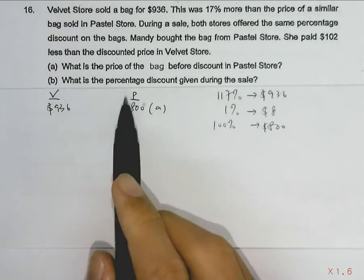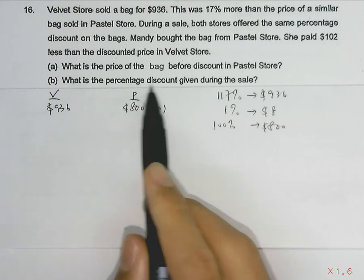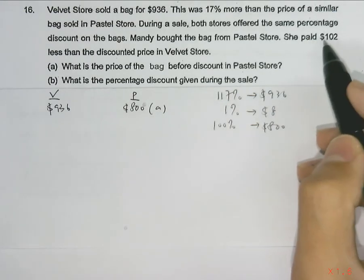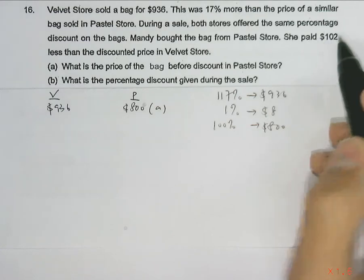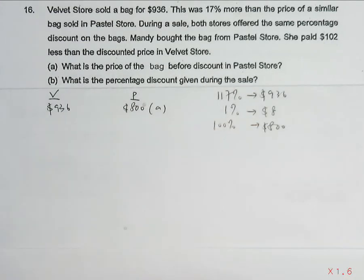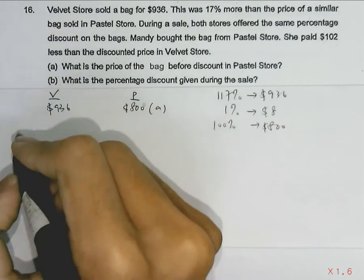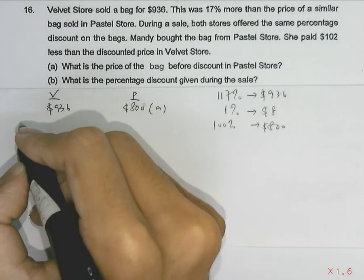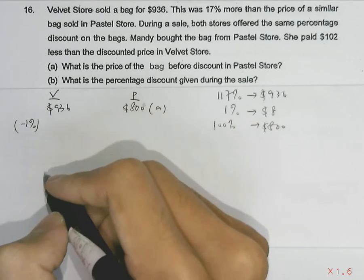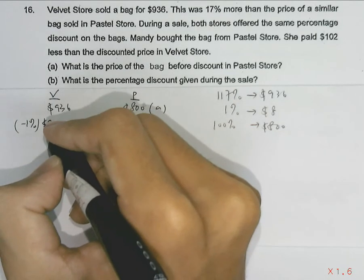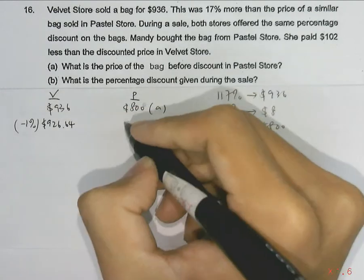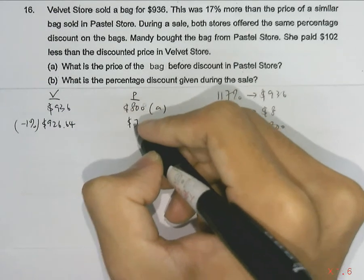Moving on to part B, they asked what is the percentage discount given during the sale, knowing that she paid $102 less than the discounted price in the velvet store. If both stores have a 1% discount, the velvet store will be selling the bag at $926.64, and the pastel store will be selling the bag at $792.